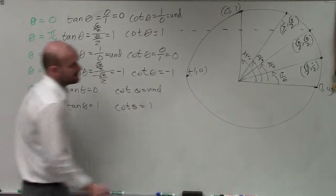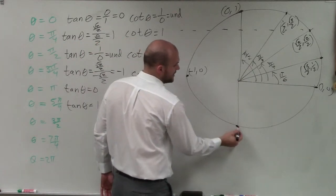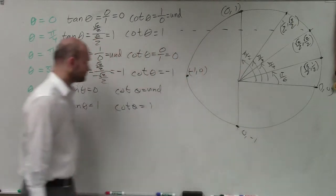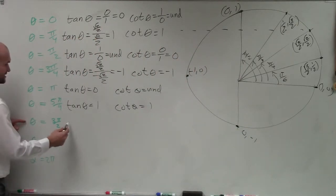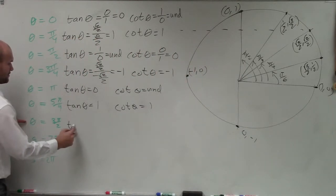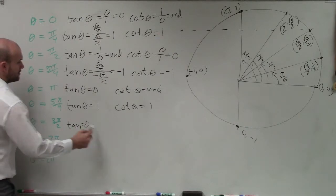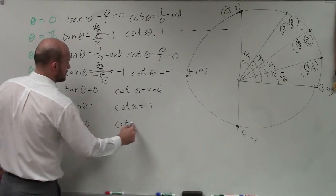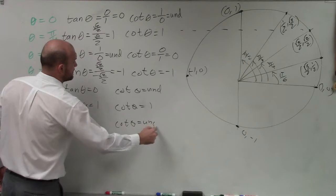For 3 pi over 2, that's the angle at coordinate point 0, negative 1. So tangent is y over x, which equals negative 1 over 0 — that's undefined. And the cotangent of theta is also undefined — wait, cotangent is 0 over negative 1, which equals 0.